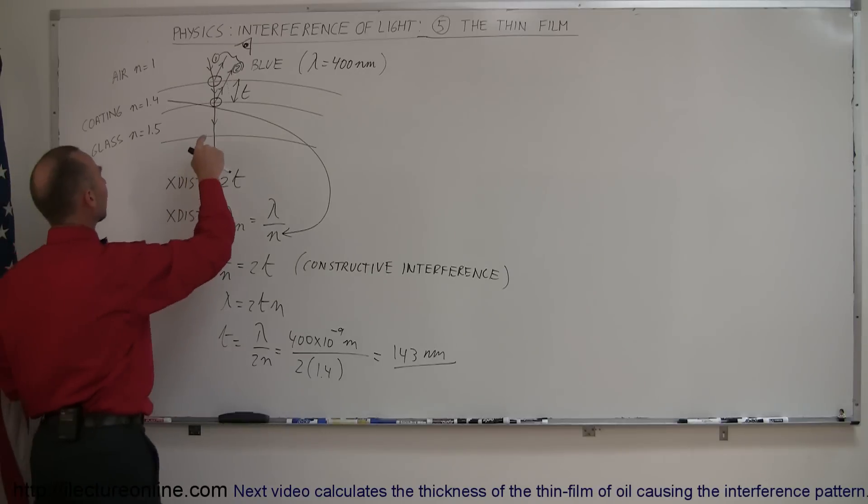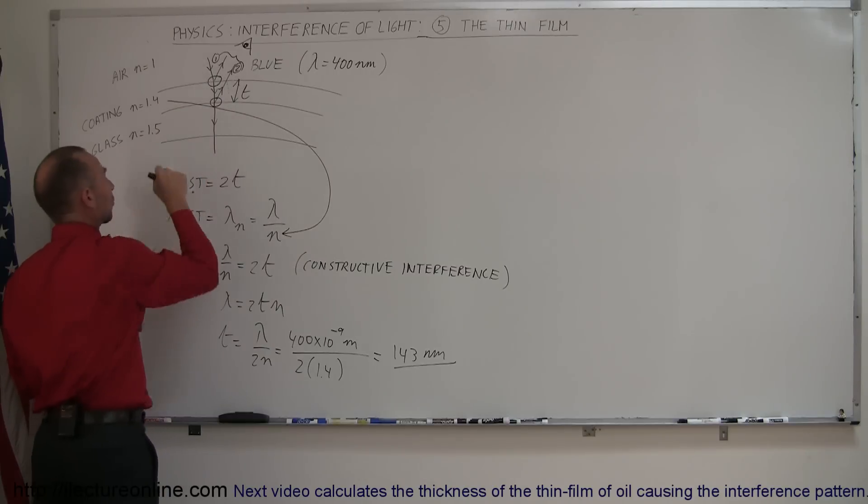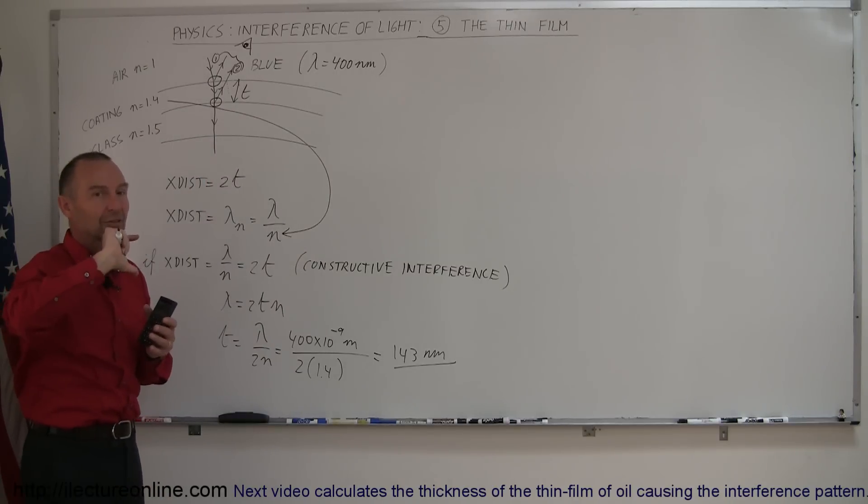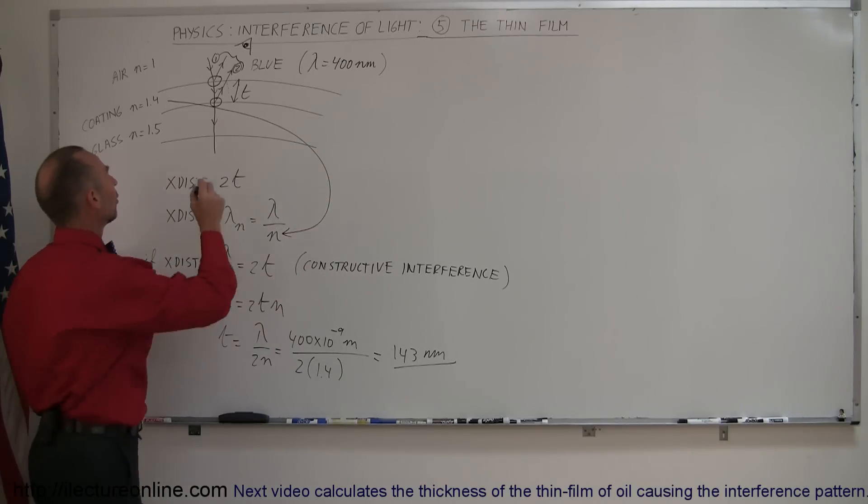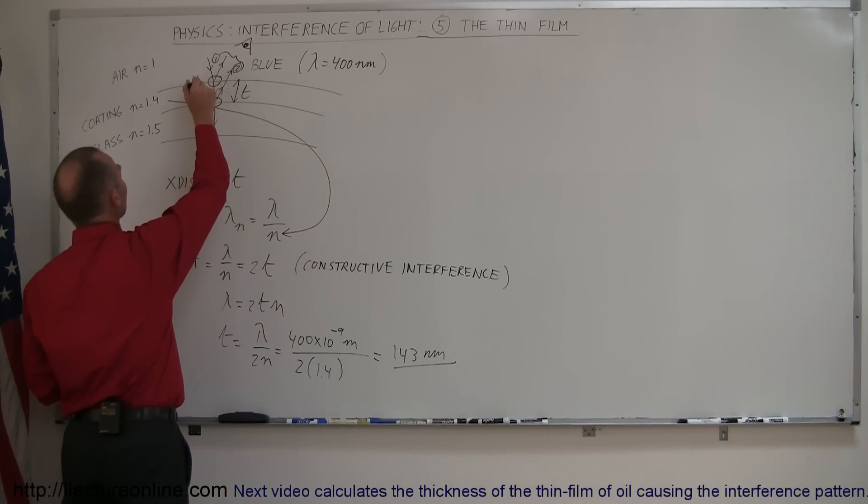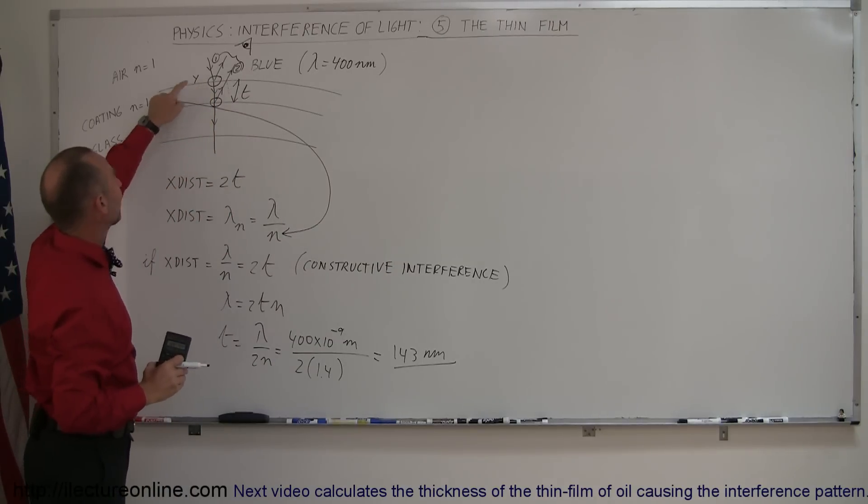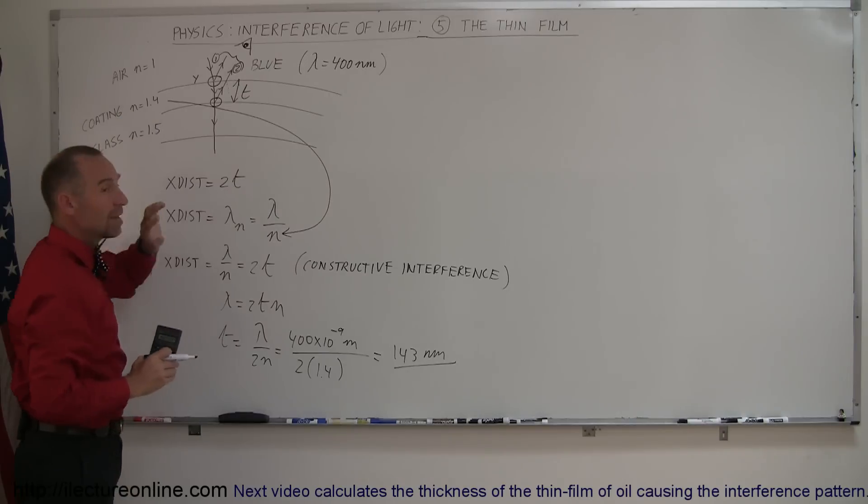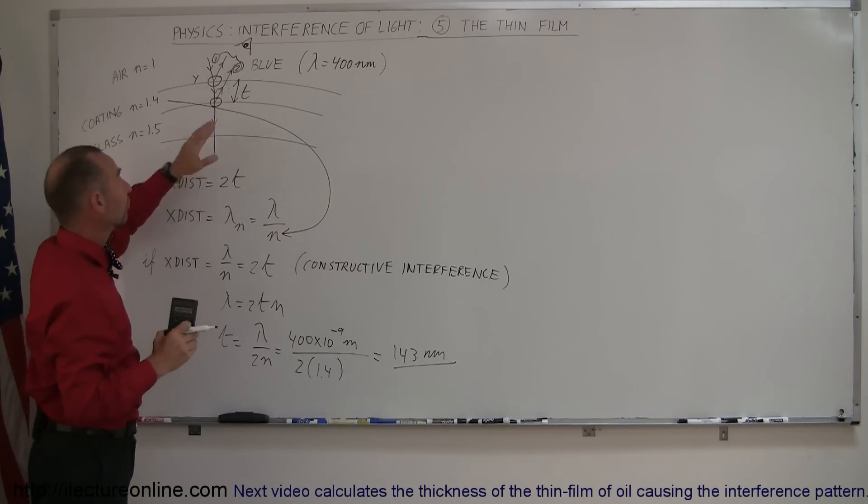When light bounces off a boundary or reflects off a boundary, where the index of refraction on the other side of the boundary is greater than the index of refraction where it came from, then light will actually have a phase shift, an instantaneous shift of 180 degrees. So here I'm going to put the letter yes, or Y for yes, because yes, there is a phase shift here because we go from 1 to 1.4, which means the light, as it's reflected, is already 180 degrees different from what it was when it bounced off the interface.